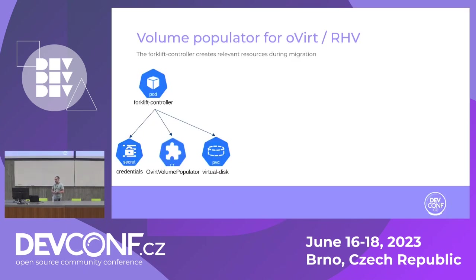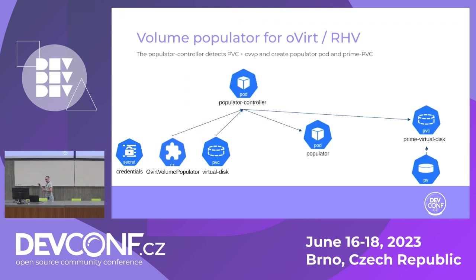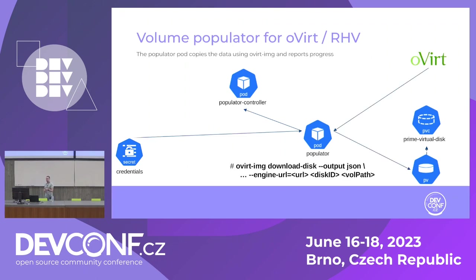There is a controller in Forklift that posts three resources: a secret holding credentials and properties of the source provider, a CR called 'OVIRT volume populator', and the PVC that will hold the content of the virtual disk. Then another controller — the populator controller based on the lib-volume-populator library — creates the prime PVC and the populator pod. Inside the pod, we run a command using 'ovirt-img', a native tool provided by OVIRT to interact with OVIRT imageIO to upload and download disks, and then write them into the PV.